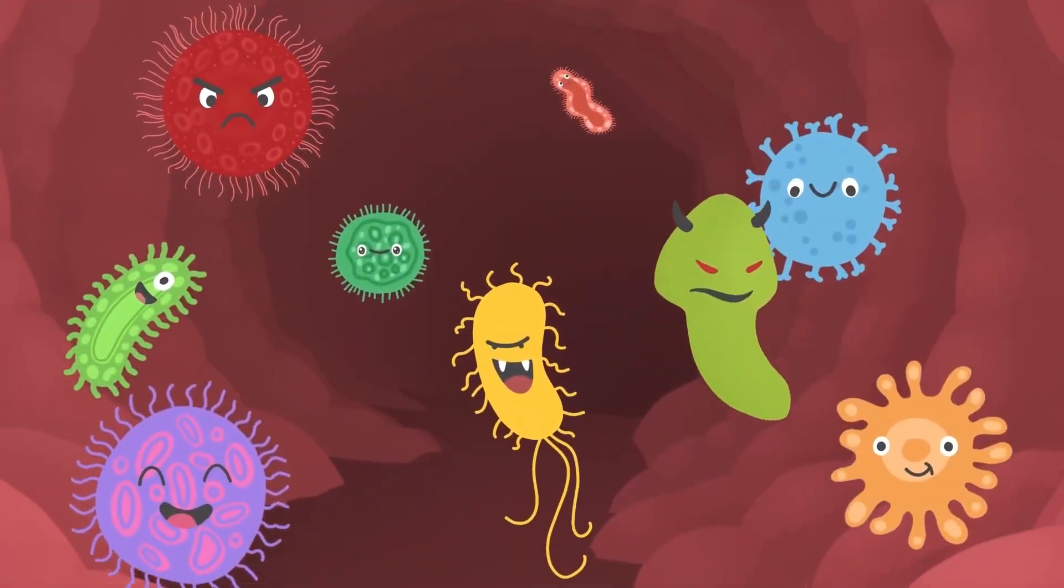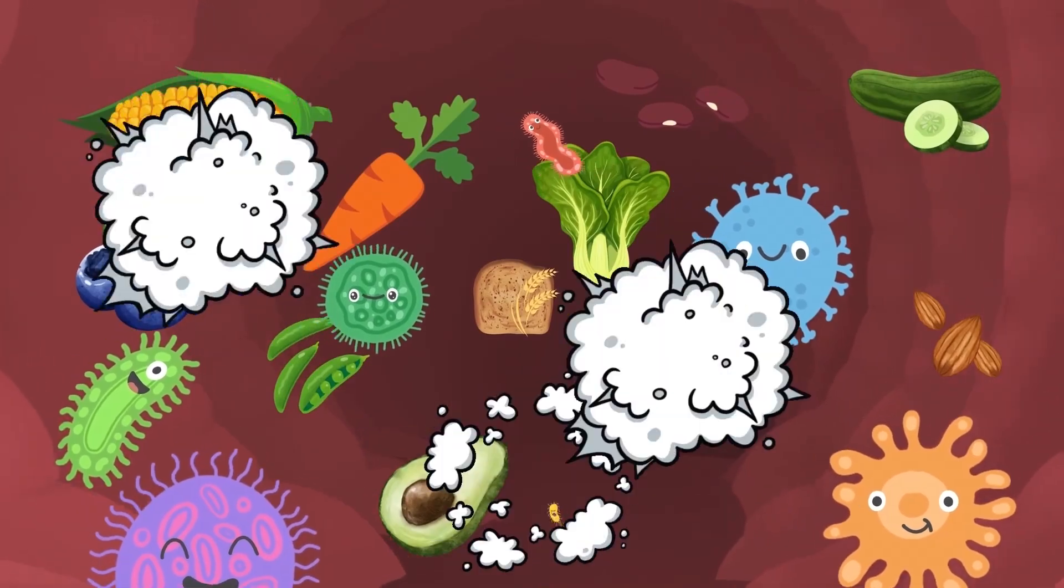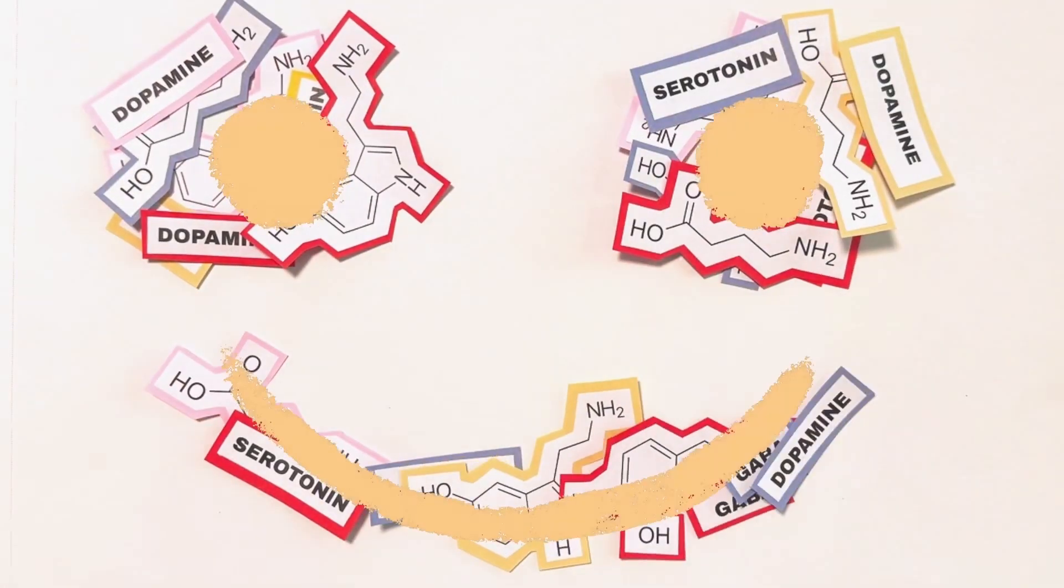Although bad microbes also exist, you can promote a healthy state of gut microbiome called eubiosis through a plant-rich, fiber-filled diet. This allows for more compounds beneficial to aspects of brain health like mood.